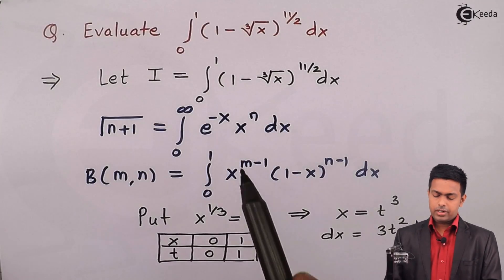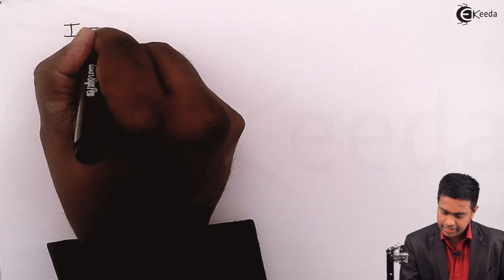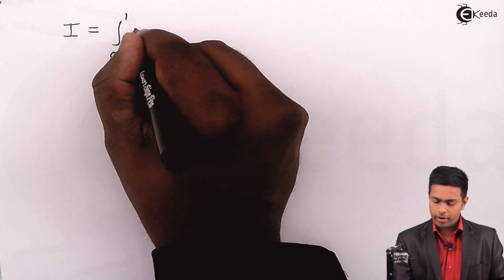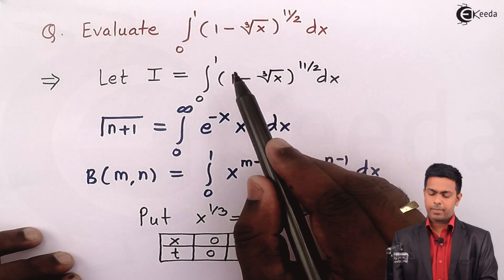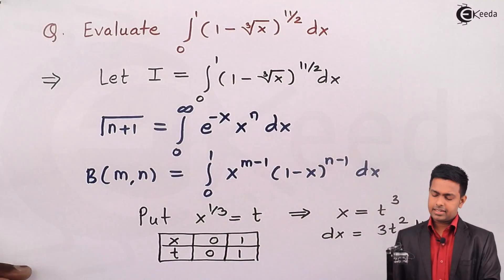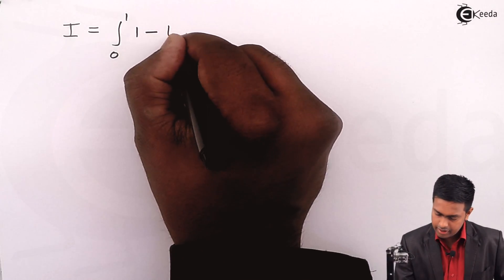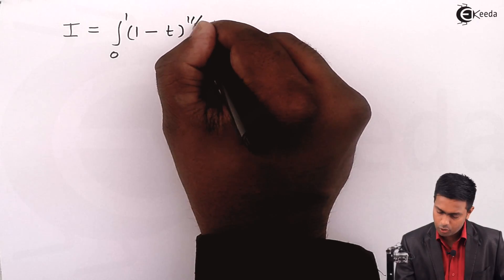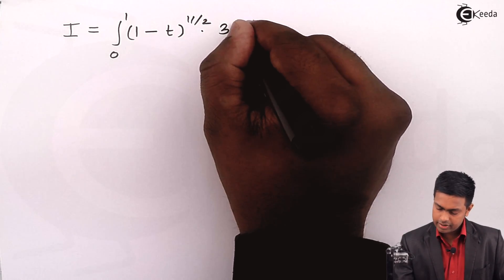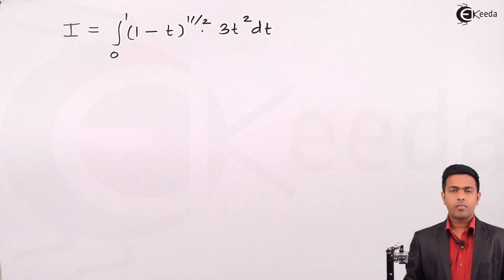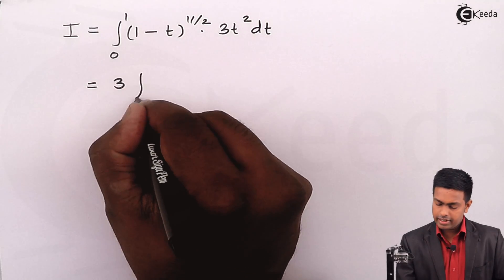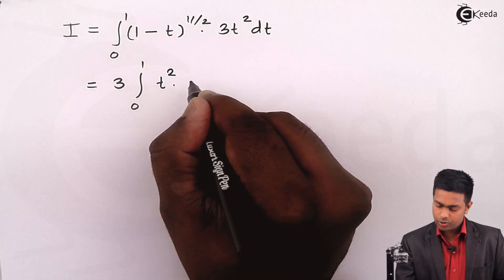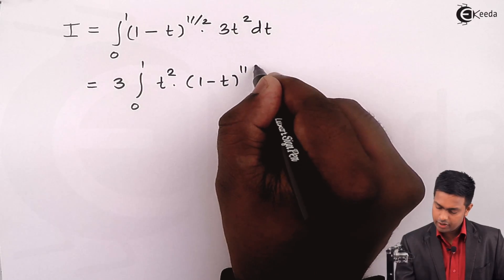Now let's substitute the values into the integration I. We get I = ∫₀¹ (1 − t)^(11/2) · 3t² dt. Taking the constant 3 outside the integration gives: 3 · ∫₀¹ t² · (1 − t)^(11/2) dt.